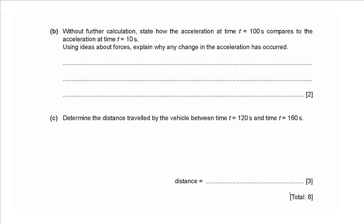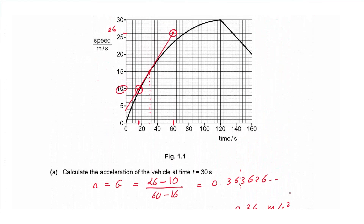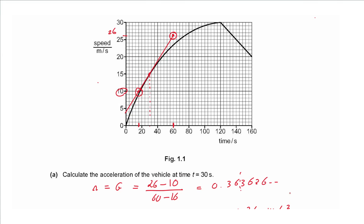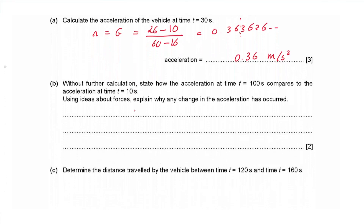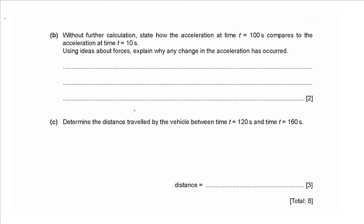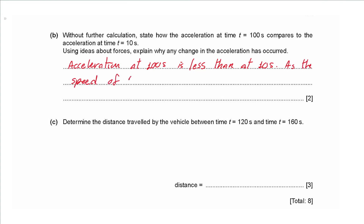Part b says: without further calculation, state how the acceleration at time t equals 100 seconds compares to the acceleration at time 10 seconds, and explain using ideas about forces. At 100 seconds the gradient is low; at 10 seconds the gradient is high. So acceleration at 100 seconds is less than at 10 seconds. As the speed of the vehicle increases, air resistance increases, so the resultant force decreases, and this decreases the acceleration.